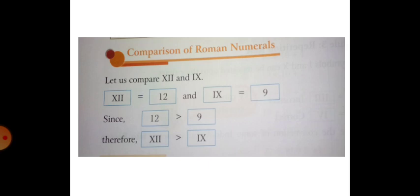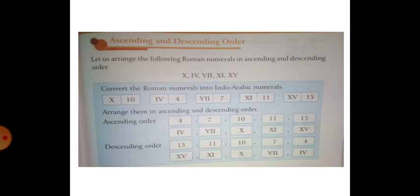The next topic is comparison of Roman Numerals. Let us compare the numbers 12 and 9. First, we write the Indo-Arabic numerals. After that, we put the symbol for greater than or less than, and lastly we arrange the Roman Numerals.